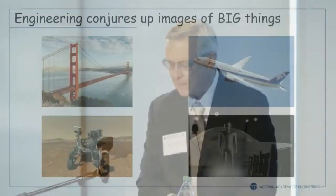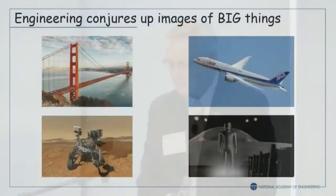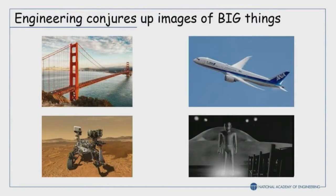Engineering the small. When people think about engineering, they think about the bridge — if you don't do it right, the bridge is going to fall down — the Golden Gate Bridge, the Dreamliner, the rover Perseverance. This is the ultimate engineering. But the little things are important because these big things are made of little things. Systems on systems, and you ultimately get down to molecular scale. And that's where almost all failures occur, and that's where all creative things start.